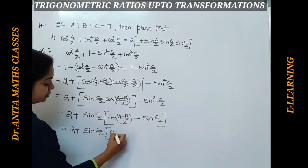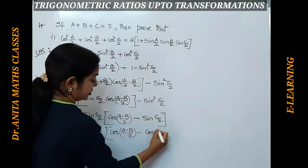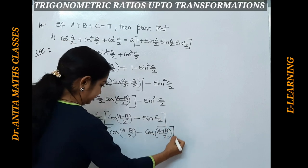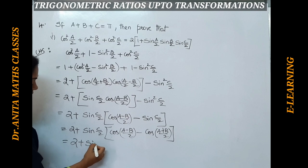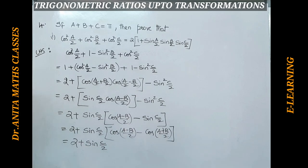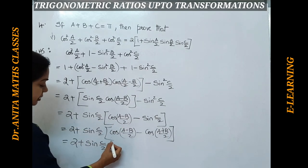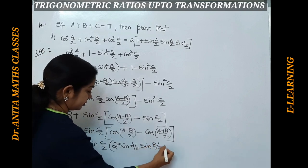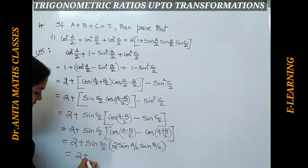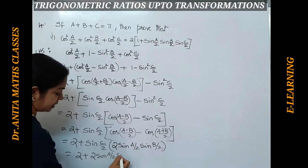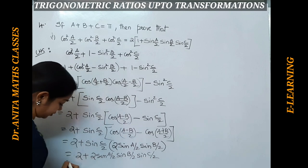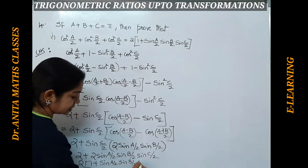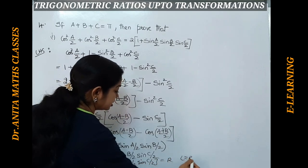Replace sin(c/2) inside the bracket with cos((a+b)/2), since sin(c/2) = cos((a+b)/2). So we have 2 + sin(c/2)·[cos((a-b)/2) - cos((a+b)/2)]. Using the transformation, cos((a-b)/2) - cos((a+b)/2) = 2 sin(a/2)·sin(b/2). Opening the bracket gives 2 + 2 sin(a/2)·sin(b/2)·sin(c/2), which equals 2[1 + sin(a/2)·sin(b/2)·sin(c/2)].